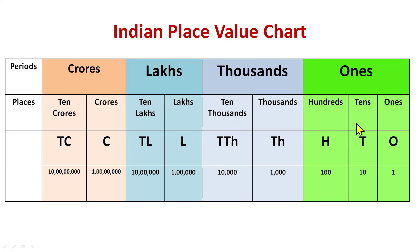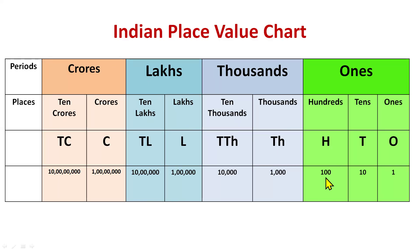For these places we have shortcuts: ones is O, tens is capital T, hundreds is capital H, and likewise for the others. In numeral form: ones is 1, tens is 10, hundreds is 100, thousands is 1,000, ten thousand is 10,000, lakhs is 1,00,000, ten lakhs is 10,00,000, crores is 1,00,00,000, and ten crores is 10,00,00,000.